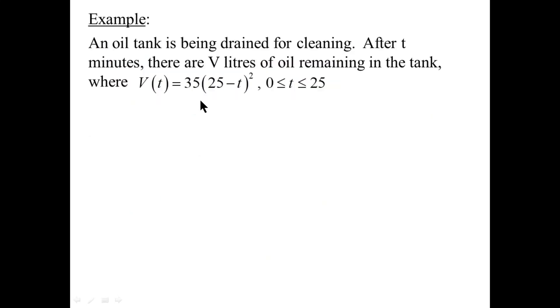Let's go to the next example. An oil tank is being drained for cleaning. After t minutes, there are V liters of oil remaining in the tank, where V of t is equal to 35 times 25 minus t squared, 0 less than or equal to t less than or equal to 25. Now, we have to take our variables in context. This is not velocity. This is volume at time t.